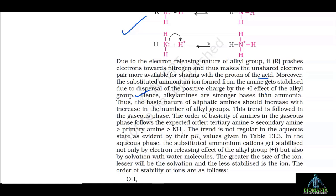The basic nature of aliphatic amines should increase with the number of alkyl groups. This trend is followed in the gaseous phase: tertiary > secondary > primary > NH3. The trend is not regular in aqueous solution as evident by pKb values in table 13.3. In the aqueous phase, the substituted ammonium cations are stabilized not only by the electron-releasing effect of the alkyl group but also by solvation with water molecules. The greater the size of the ion, the lesser the solvation and the less stabilized is the ion.